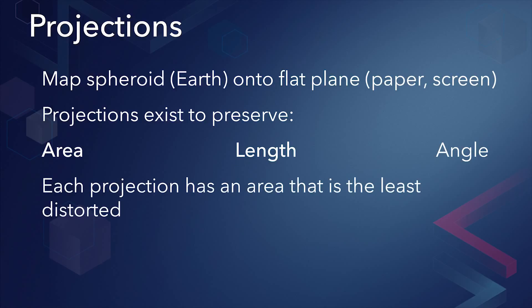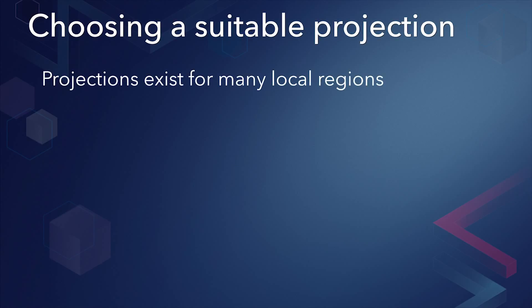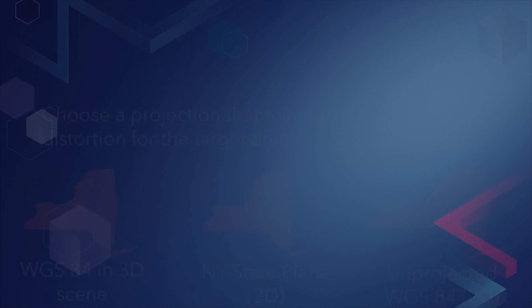For each projection, there is a portion of the map that is the least distorted. When representing a particular area such as a city, state, or country, you should choose a map projection that minimizes distortion for that area. However, the size and orientation of an area can make it impossible to accurately represent with a single map projection. It's important to know which spatial properties are preserved for the map projection you've chosen and the extent over which your projection meets your requirements.